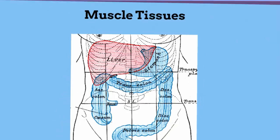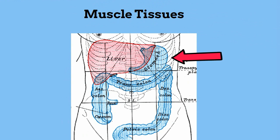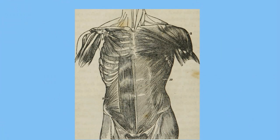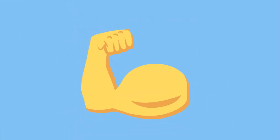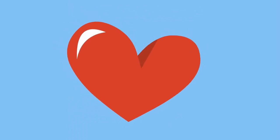There are three types of muscle tissues. Smooth muscles, which are involuntary muscles found inside organs — a common example are muscles in your stomach. Skeletal muscles, which are muscles attached to our bones, for example your bicep or forearms. And cardiac muscles, which are muscles in your heart.